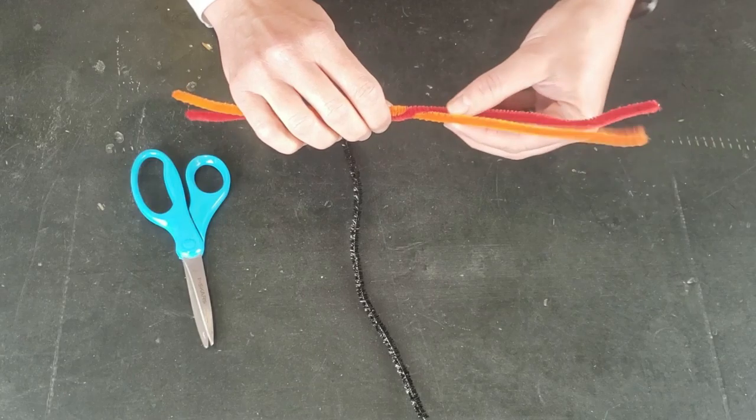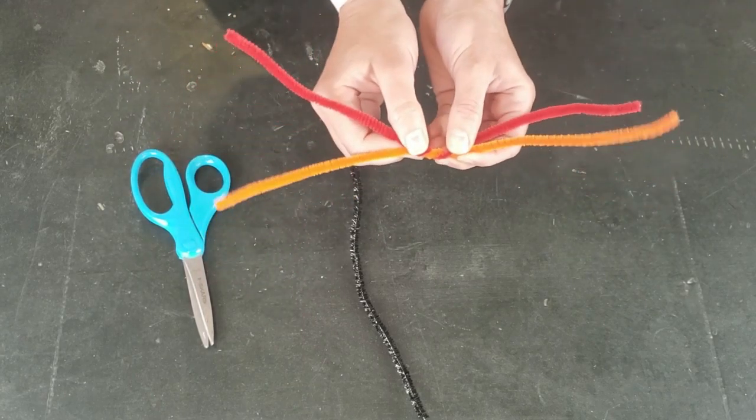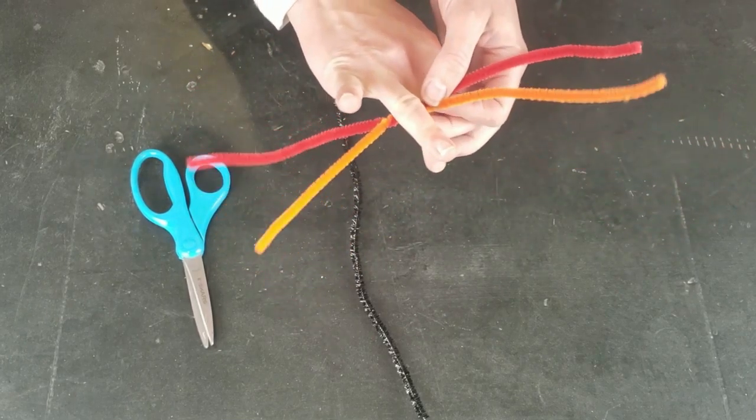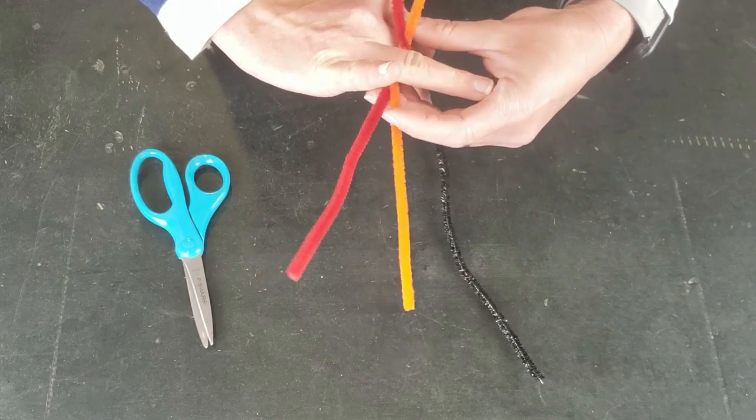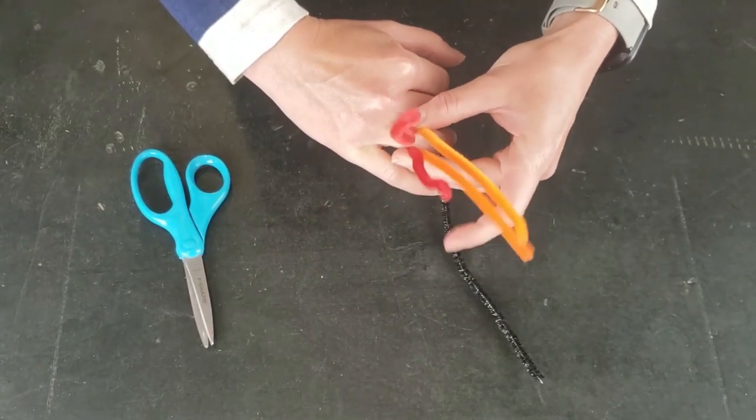Okay, to get started you'll take your two colorful pipe cleaners and line them up parallel to each other, side by side, and then we're just going to lightly twist them together in the middle just a few times to get them to connect.